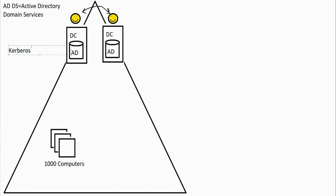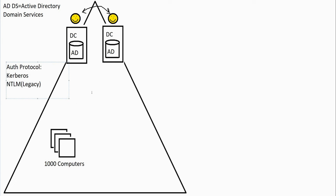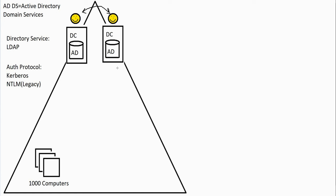A protocol is basically like a language. Active Directory also uses a language known as LDAP — Lightweight Directory Access Protocol — which is the directory service language. All of this is decades old at this point; at the time it came out it was cutting edge, but it is a bit dated nowadays. It still works and is still pretty secure, though there are some security considerations I won't get into right now.